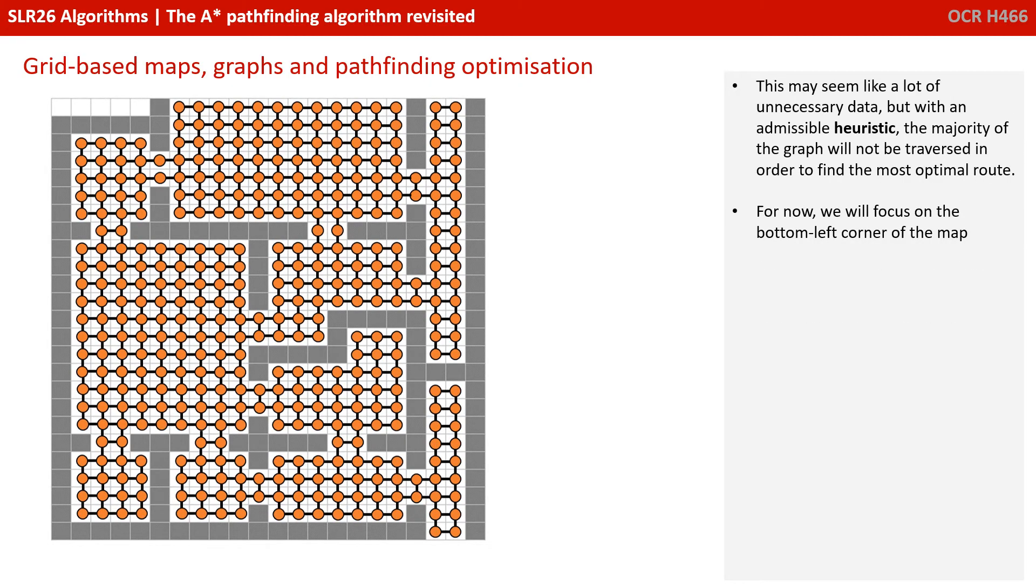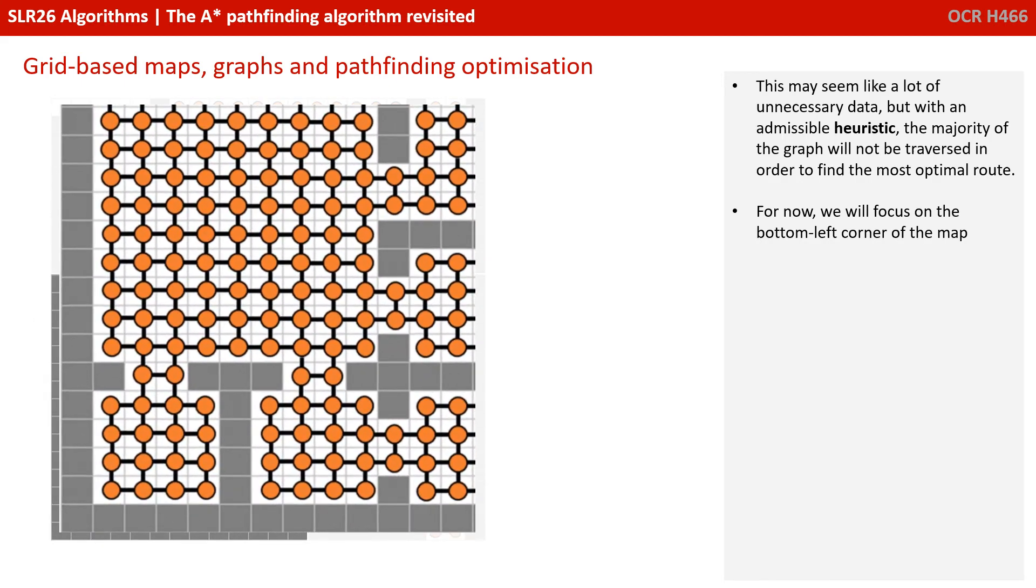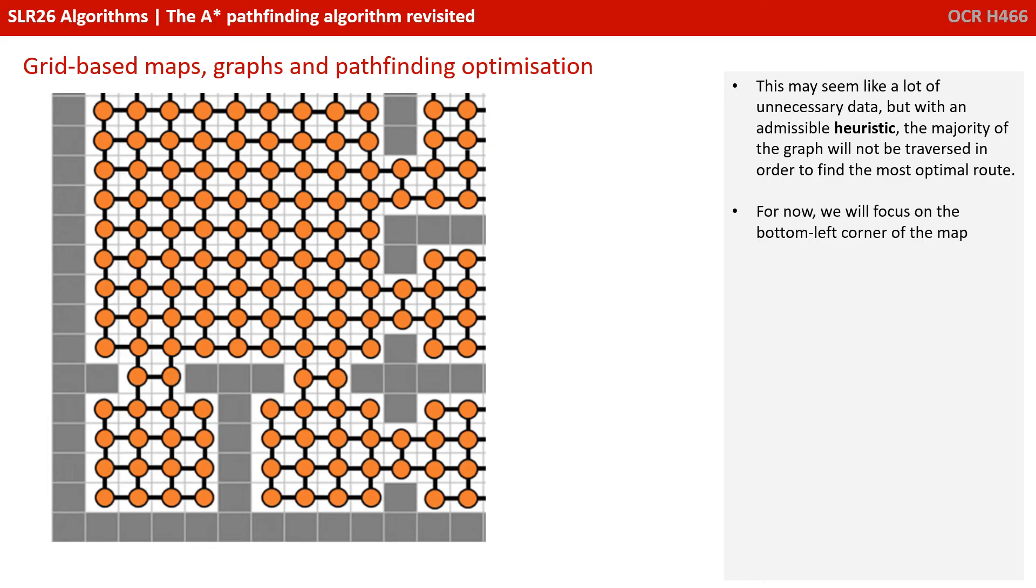In this illustration, we would use a graph where every reachable white square, not a wall, becomes a node or vertex. Now, this may seem like a lot of unnecessary data, but with an admissible heuristic, the majority of the graph will not be traversed in order to find the most optimal route. For now, we'll focus on the bottom left corner of the map.